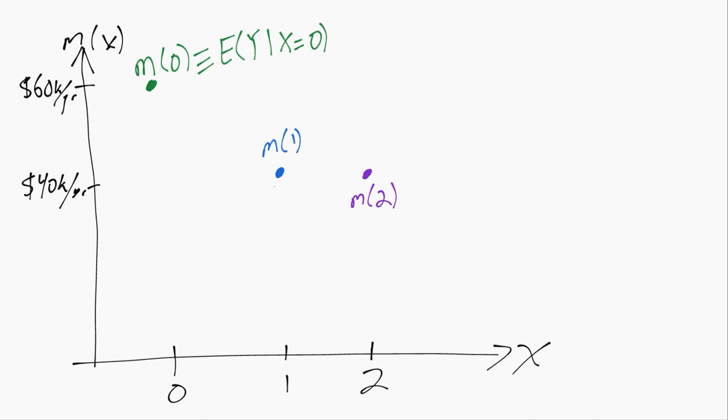As an extreme example, if we imagine the probability X equals 2 is literally zero - in other words, there's nobody in the entire population with two siblings - then we can just ignore the purple point.